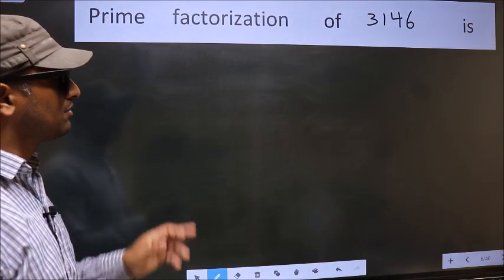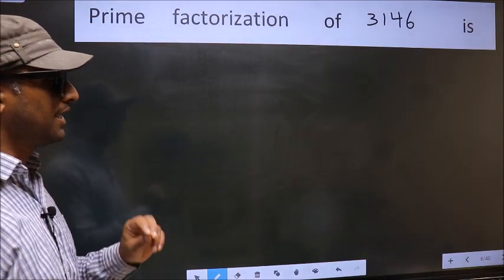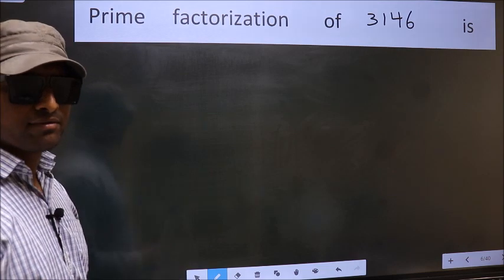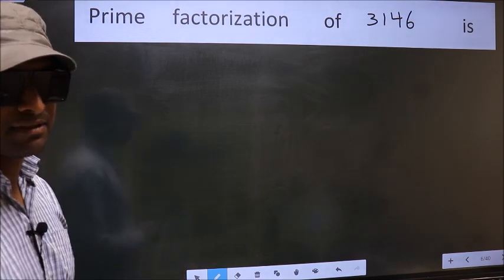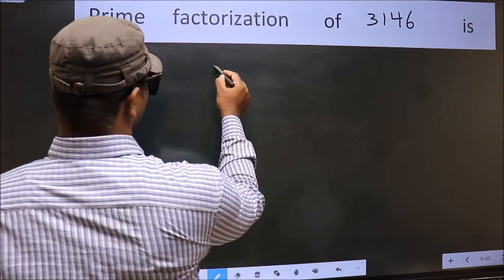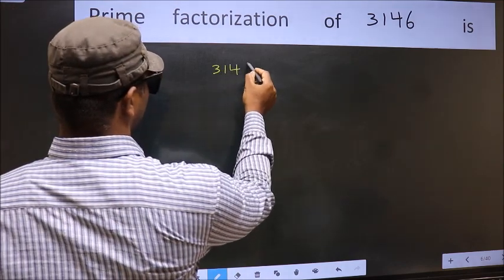Prime factorization of 3146 is. To do prime factorization, first we should frame it in this way. 3146.